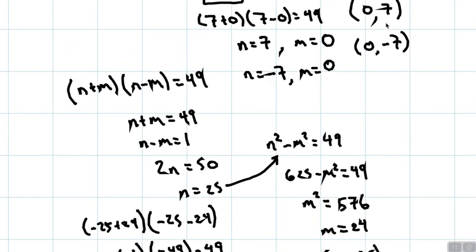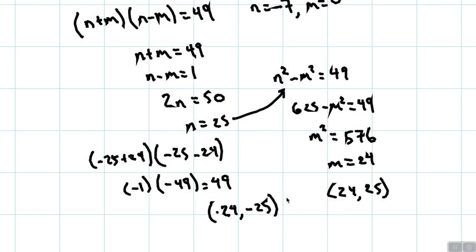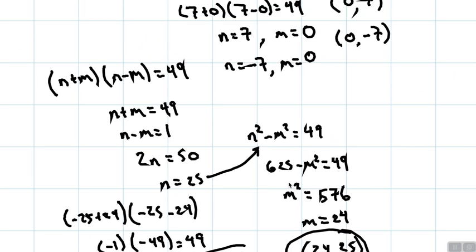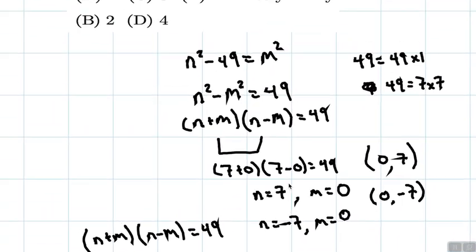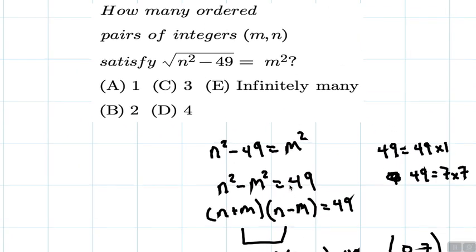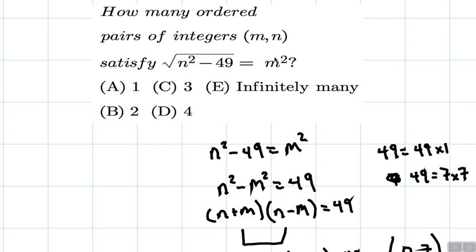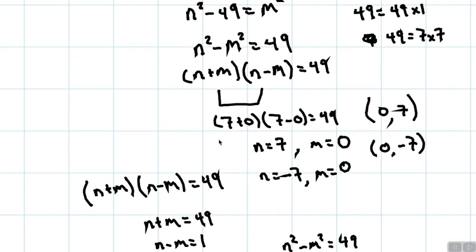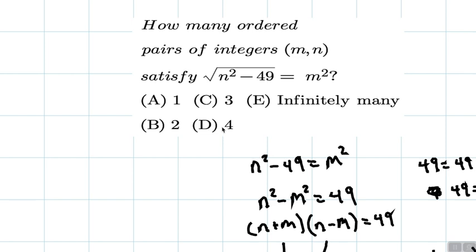Same pattern that we found up here, this is changing from positive to negative. This stays the same. And if you play around with that, you'll find that this is positive 24 comma negative 25. And these are the four ordered pairs. There's no other way to have an integer pair such that this equation is satisfied. So since there are four ordered pairs, answer is choice D.